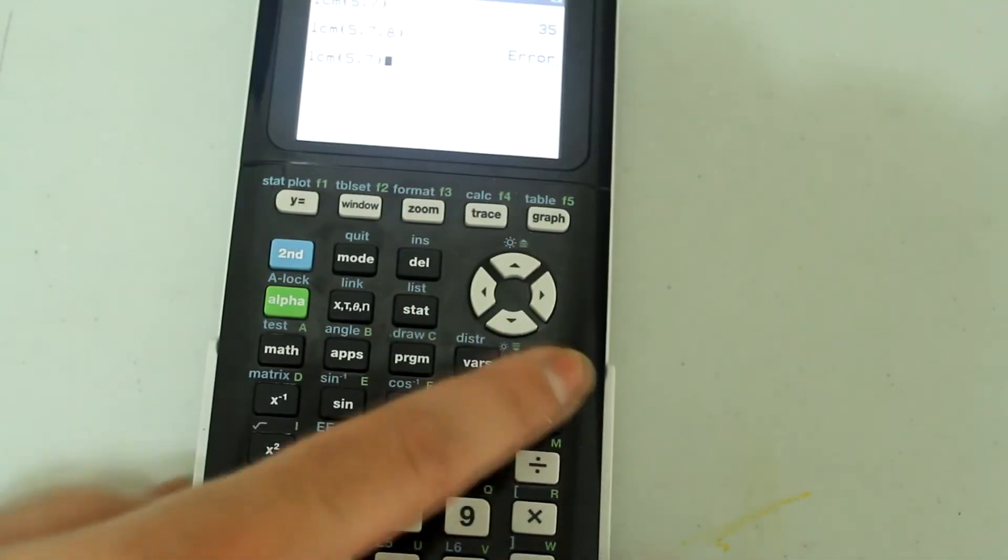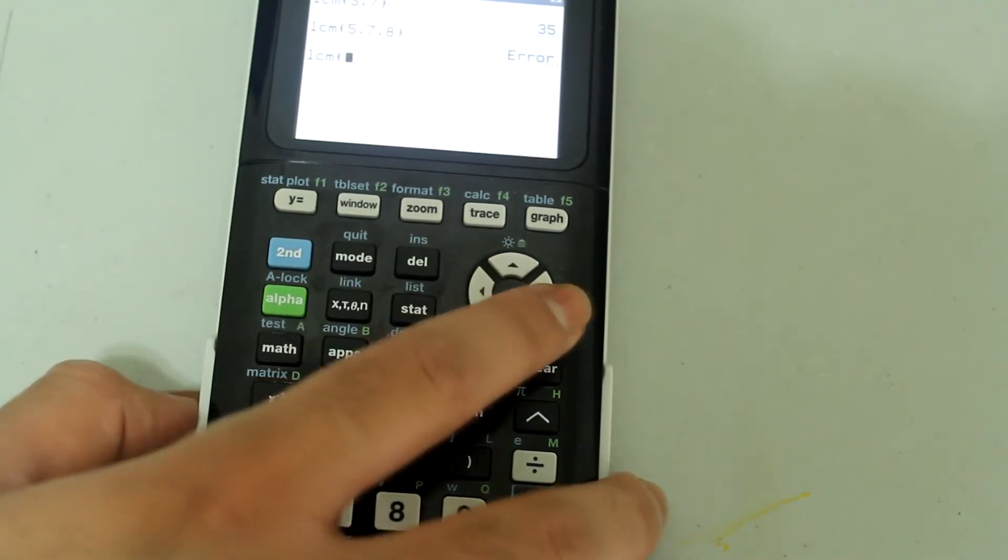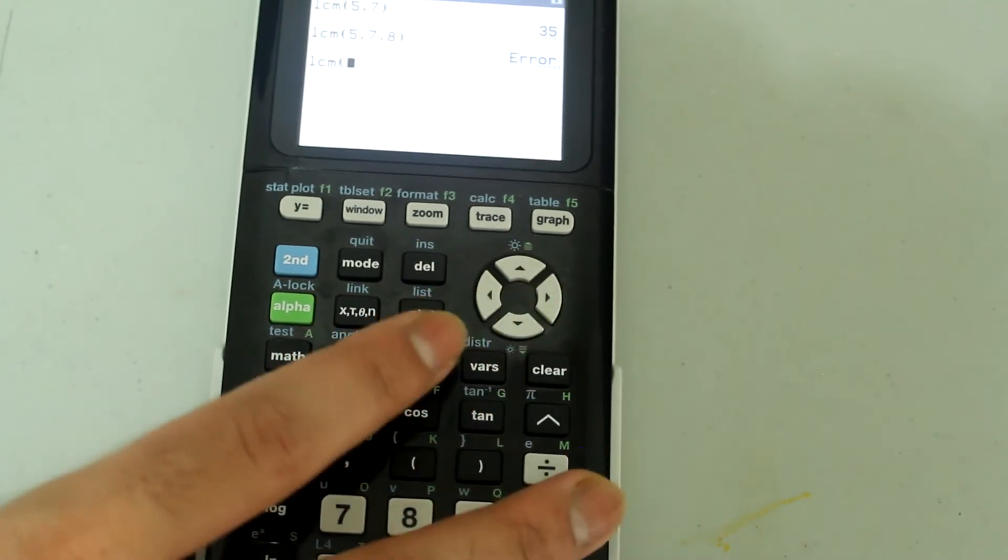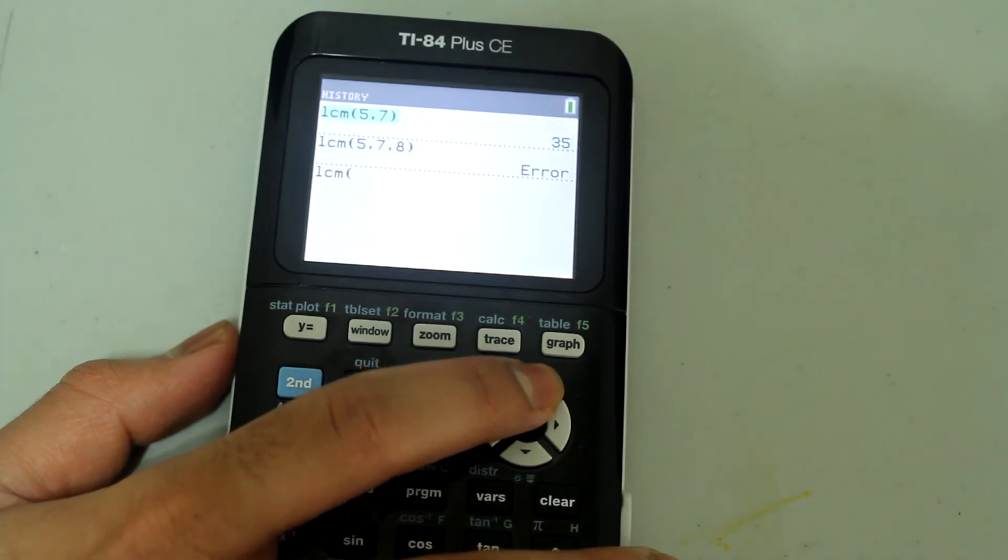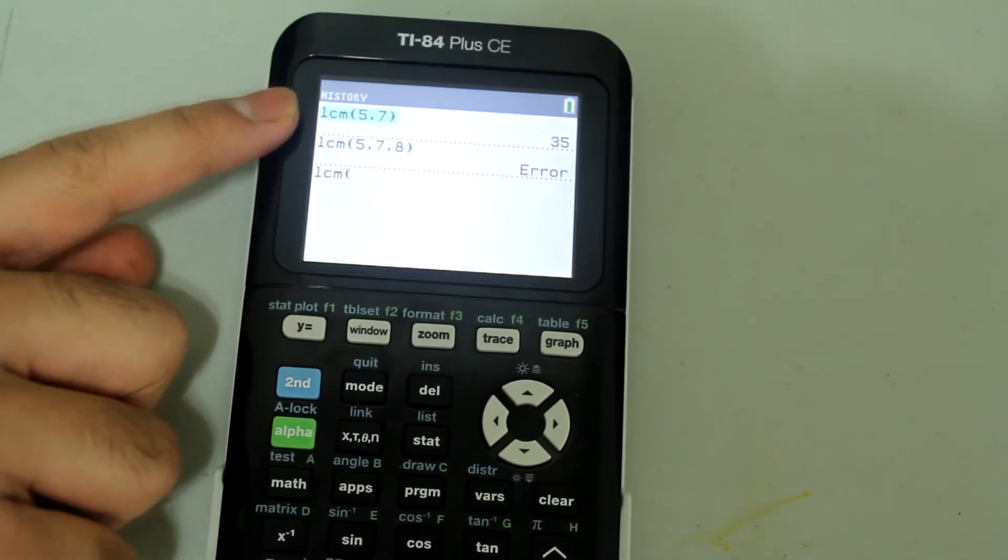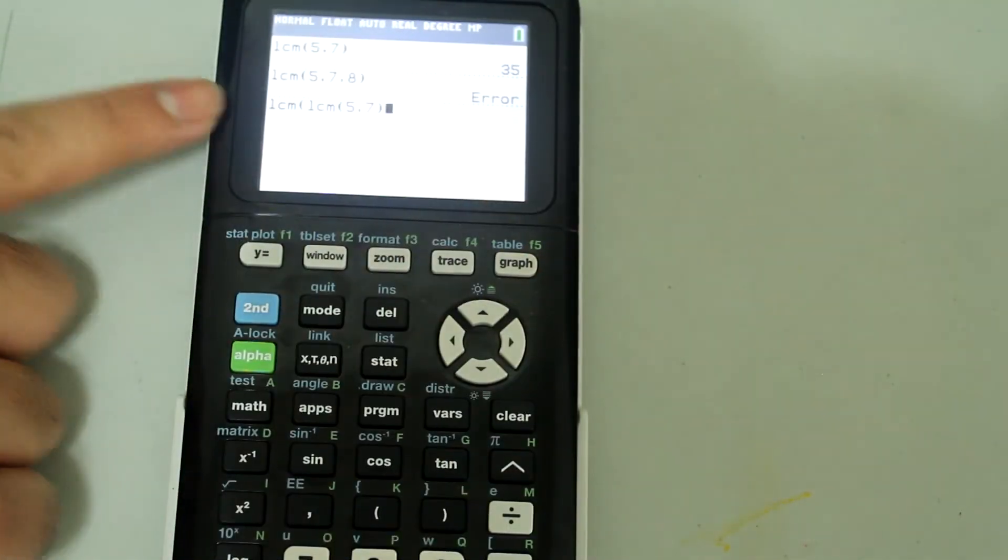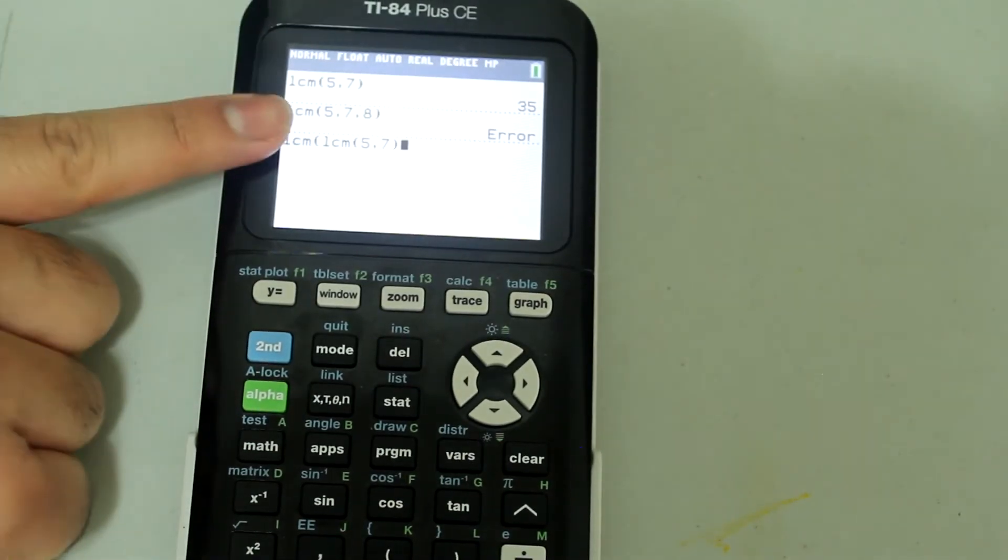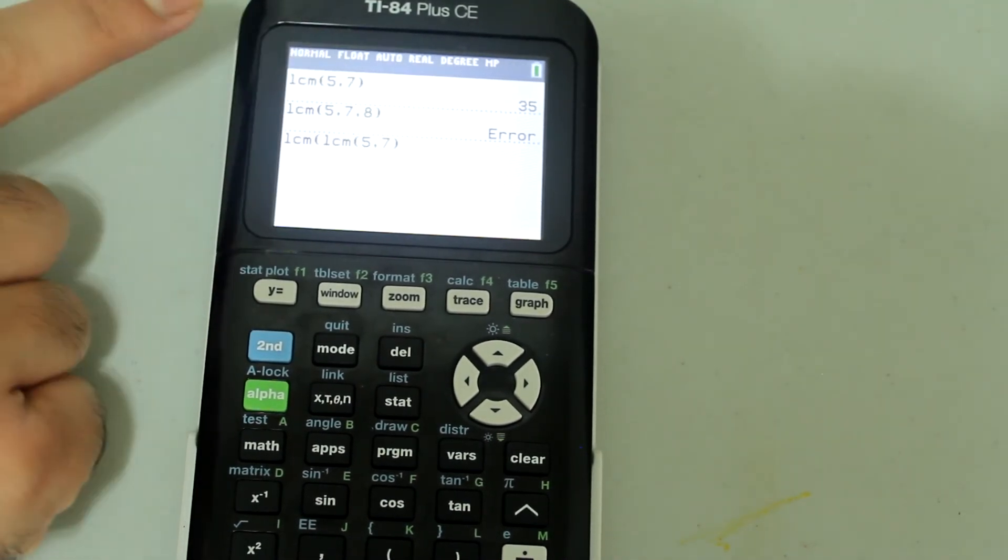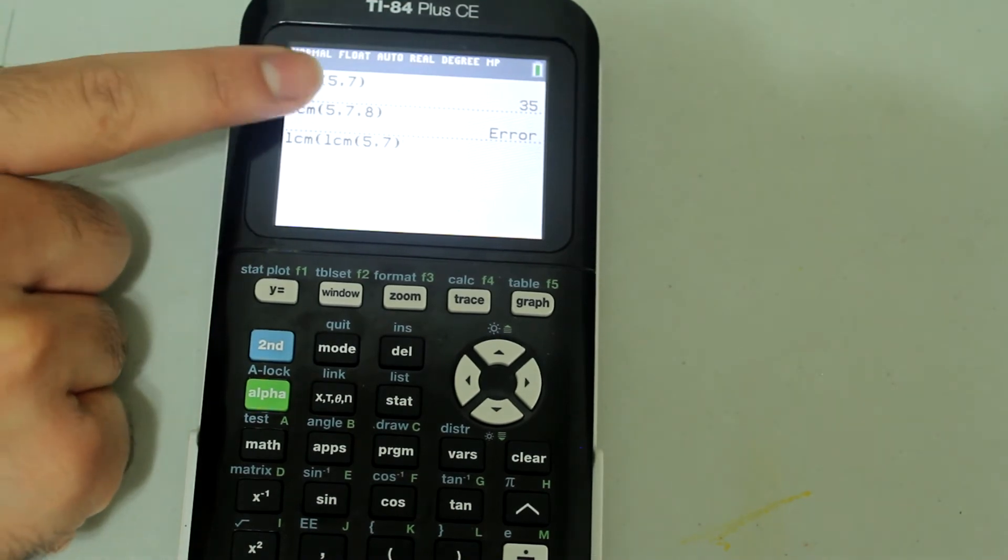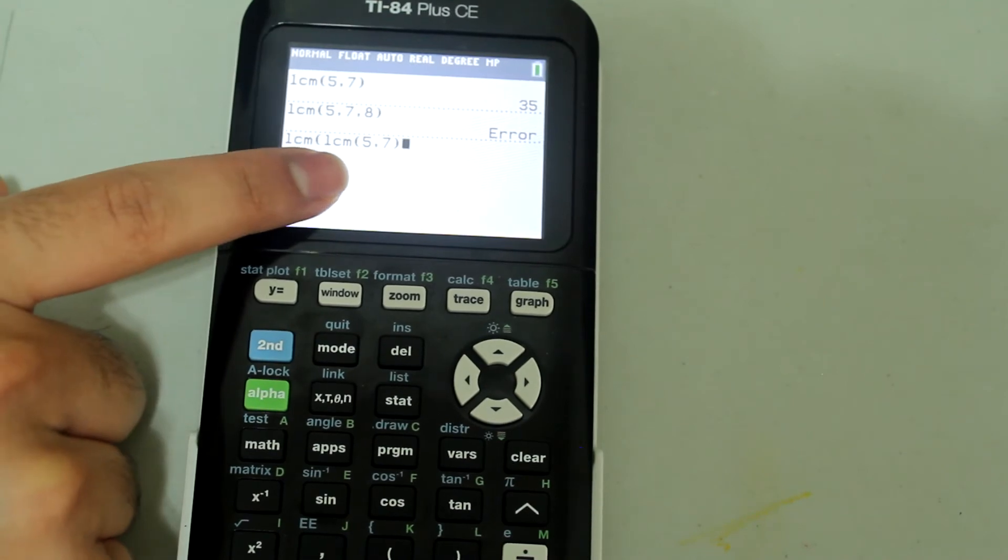I'll just delete the entries on the inside. So I have the entries on the inside deleted. What I'm going to do is open another LCM command. So this appears like this as of right now. And I want to find the least common multiple for 5, 7 and 8. So here I have the LCM of 5 and 7.